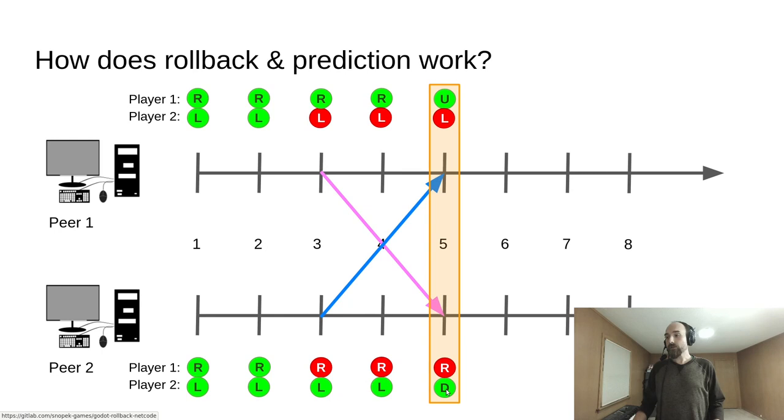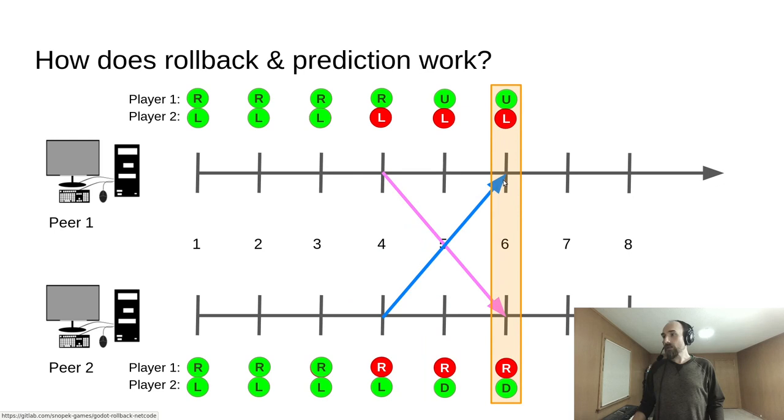Frame number 5. Player 1 has changed their input—they're now pressing up. Player 2 has also changed their input—they're now pressing down. Our predictions are incorrect, so a rollback is coming. But for now, we're receiving the real input from tick number 3, and it matches our predictions, so we mark it as real and move on.